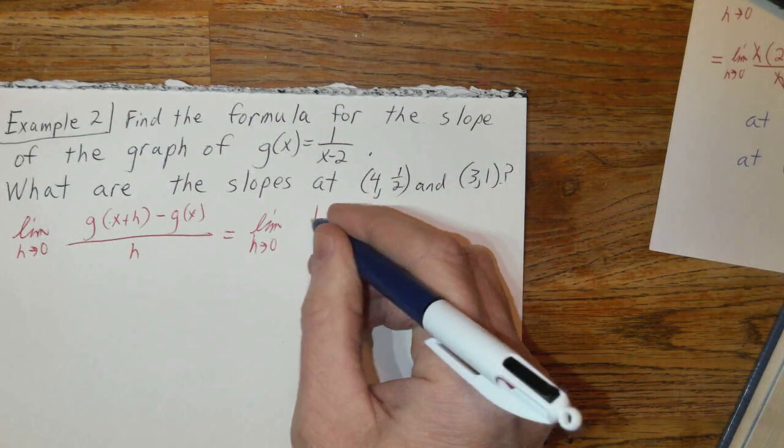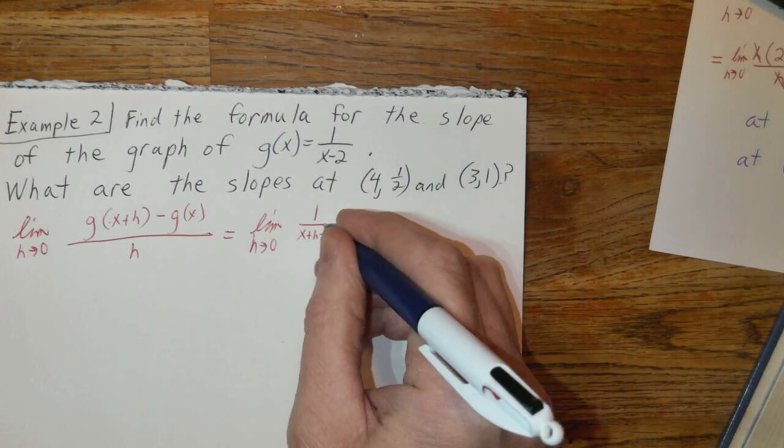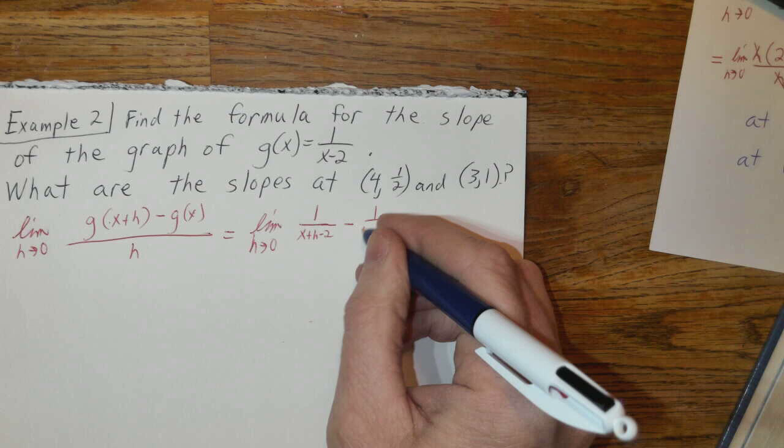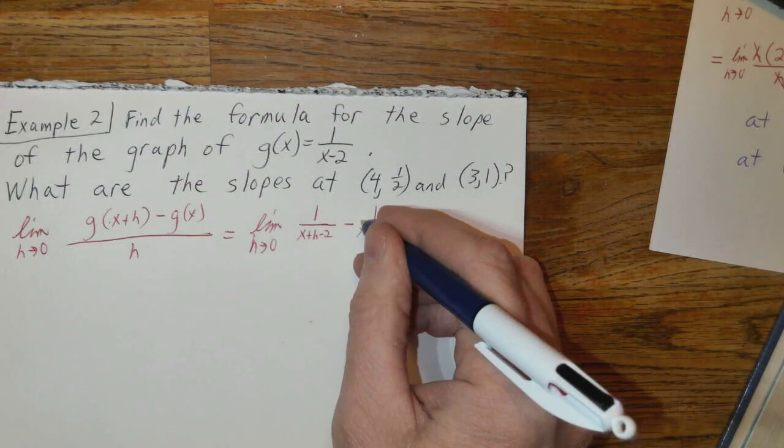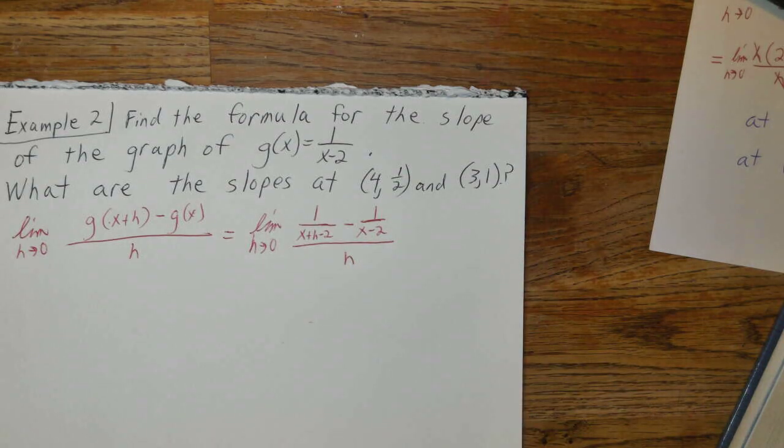That's 1/(x+h-2) minus g(x), which is 1/(x-2). And then that is over h.